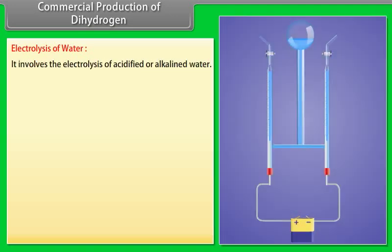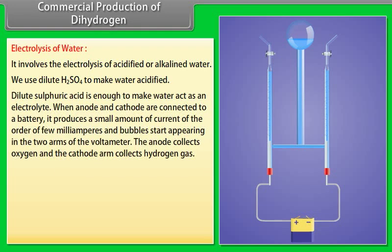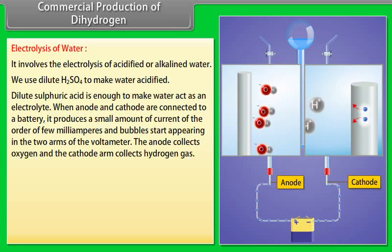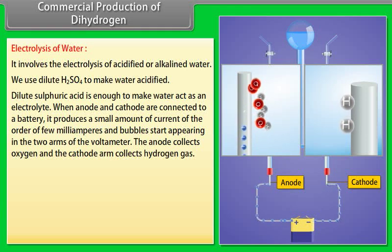Commercial production of dihydrogen. Electrolysis of water: It involves the electrolysis of acidified or alkalined water. We use dilute H2SO4 to make water acidified. Dilute sulphuric acid is enough to make water act as an electrolyte. When anode and cathode are connected to a battery, it produces a small amount of current of the order of few milliampere and bubbles start appearing in the two arms of the voltmeter. The anode collects oxygen and the cathode arm collects hydrogen gas.